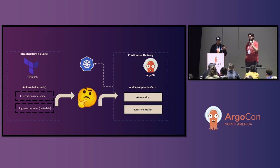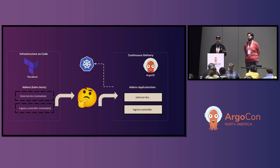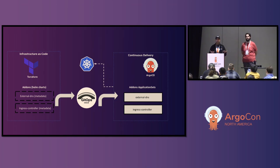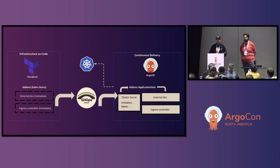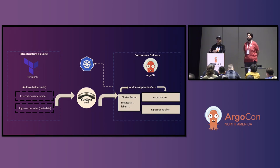Some folks have solved this but haven't put it in open source or made it a repeatable pattern. So what we did was create a GitHub org and start putting patterns in there — how do we pass this metadata from infrastructure code. We created an org called the GitOps Bridge. Basically the GitOps Bridge takes that metadata and puts it into the Argo CD cluster secret.